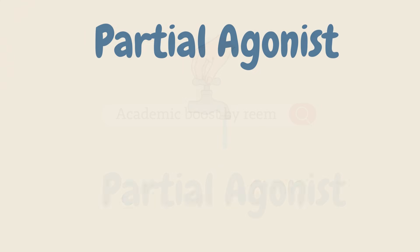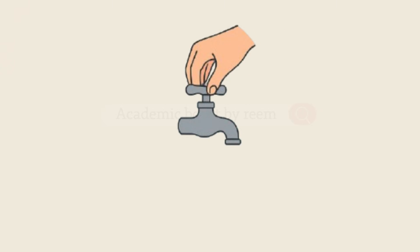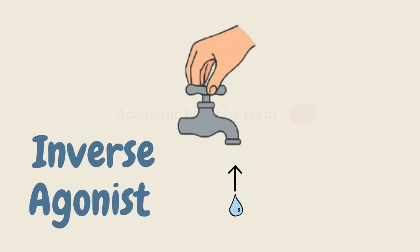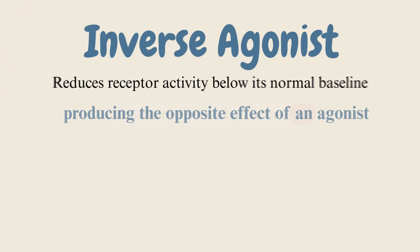Now imagine the faucet doesn't just stay off, but actually sucks water back. That's an inverse agonist - it reduces receptor activity below its normal baseline, producing the opposite effect of an agonist. So just like a faucet can be fully on, fully off, or somewhere in between, drugs can fully activate, block, or partially activate receptors.